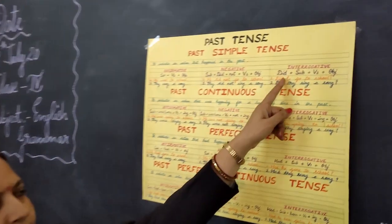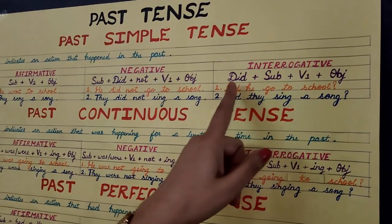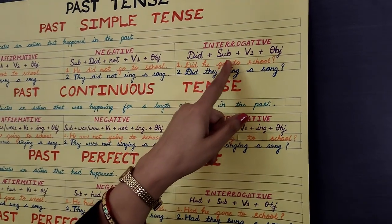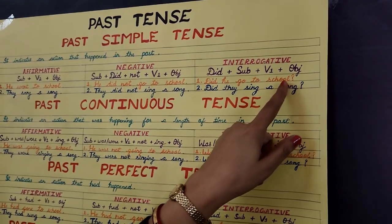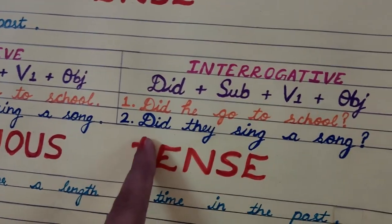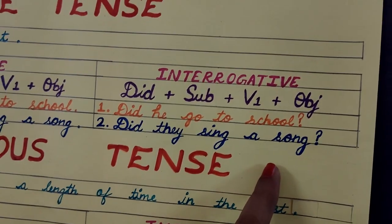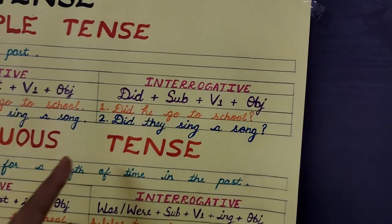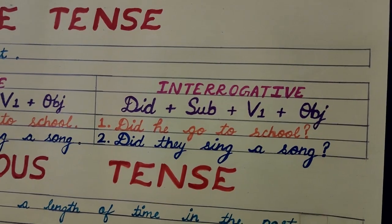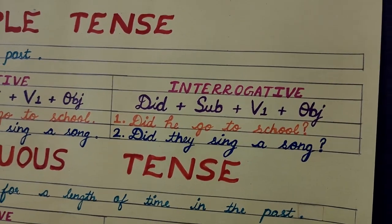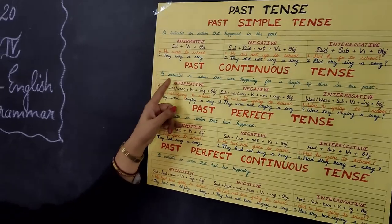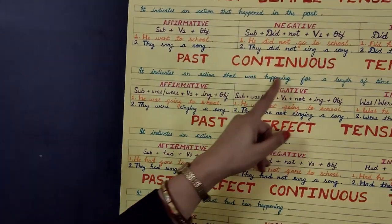Now let's move towards the interrogative sentence. Here you can see the structure: did plus subject plus verb one plus object. For example: Did he go to school? Did they sing a song? Here you can see did is the helping verb at the starting when we make an interrogative sentence. And always keep in mind you have to put a question mark at the end of the sentence.